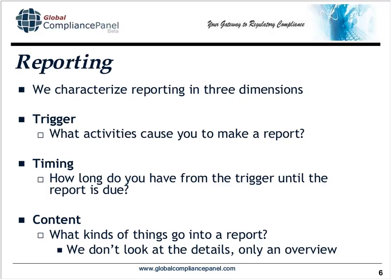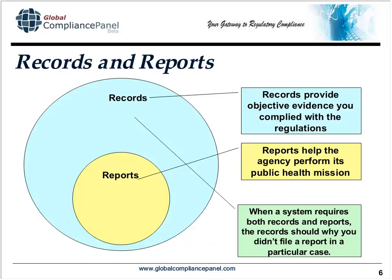In contrast to records, which are things we keep for ourselves to demonstrate objective evidence that we follow the quality management system, sometimes we have to tell the regulatory agencies that we've actually done something — I'll call that reporting. I'll characterize reporting in three dimensions. The first is the trigger: what activity causes you to make the report. The second is timing: very often regulations specify a timeframe from when the trigger occurs until the report is in the hands of the regulators. The third is content: what kinds of information go into the reports.